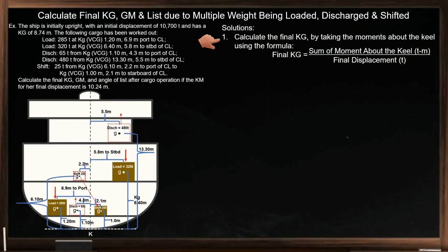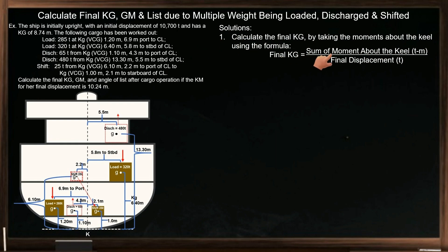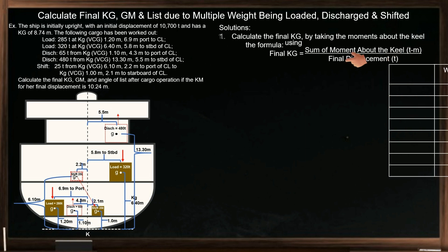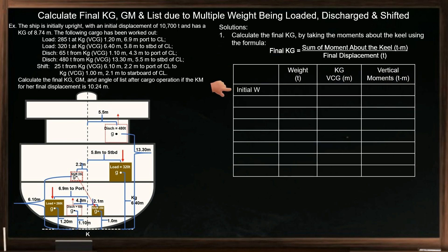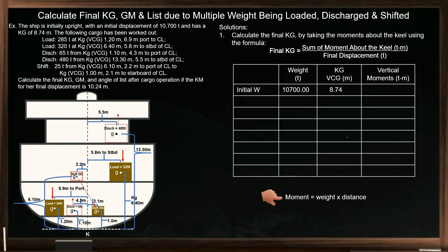Let's proceed to procedure number 1: to determine the moments about the keel involving multiple weights, we will use a tabular approach. Enter the ship's initial displacement in the second column and her initial KG in the third column. The formula for moment is weight times distance. Multiplying the ship's initial displacement by her initial KG, the vertical moment is 93,518 tonne-meters.